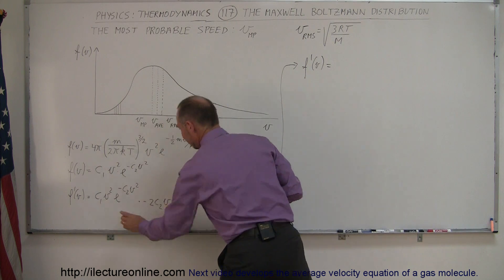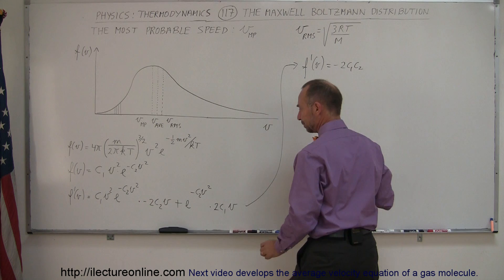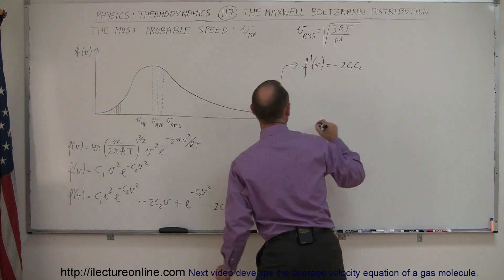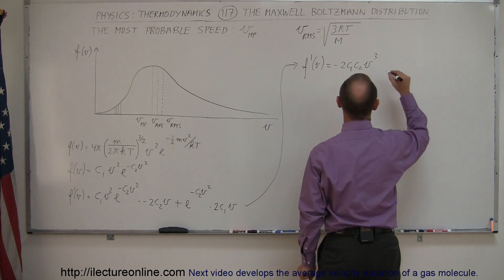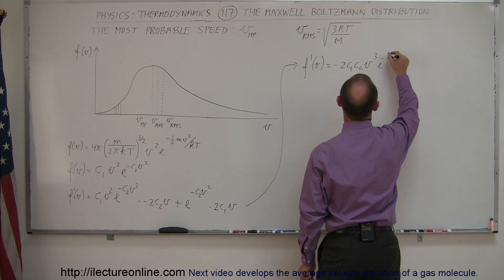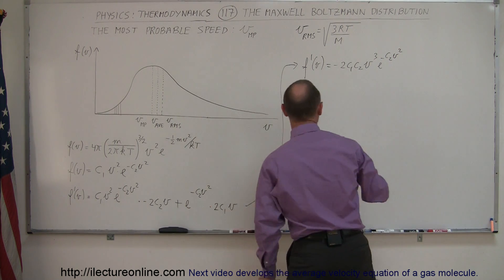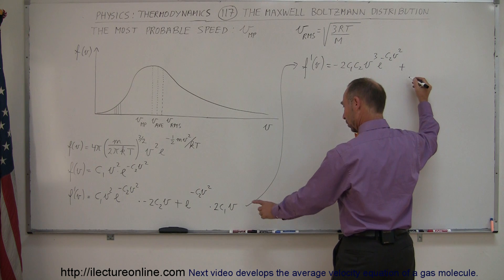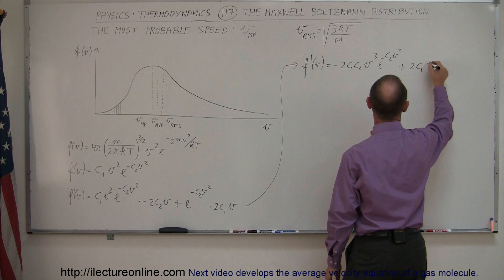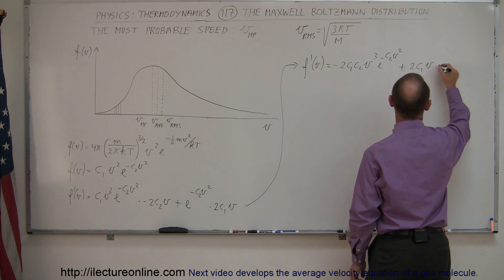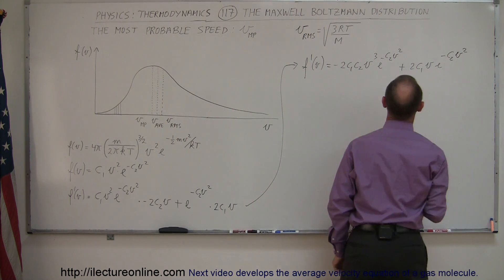So we have f prime of v is equal to, so multiply this times this, I'm going to end up with a minus 2 c1 c2. We have a v squared and a v, that means v cubed times e to the minus c2v squared. And then on the right side, we have a plus 2 c1, 2 c1 v times e to the minus c2v squared. There we go.